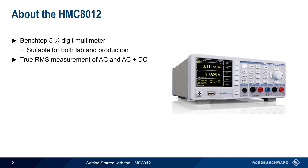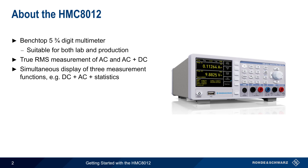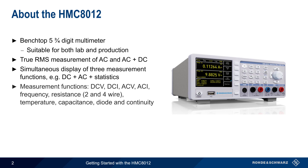It can display up to three measurement functions simultaneously – for example, DC, AC, and statistics. The main measurement functions of the HMC include DC and AC voltage and current, frequency, 2 and 4-wire resistance, temperature, and capacitance, as well as diode and continuity testing. Results are presented numerically with common statistical values, and special measurements such as limit testing, DC power, and dB or dBm values are also supported.